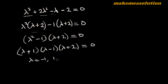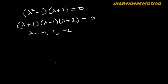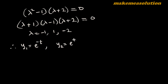The roots of the characteristic equation are λ = -1, λ = 1, and λ = -2. Corresponding to these roots, the basis solutions are: y₁ = e^(-t), y₂ = e^(t), and y₃ = e^(-2t). These are the base forms of the solutions.